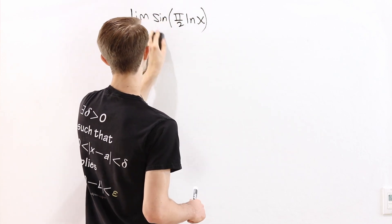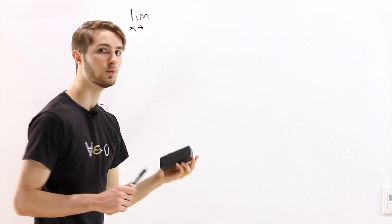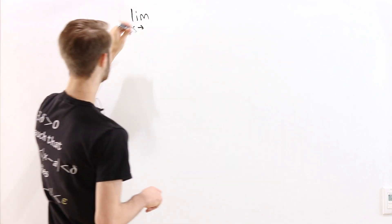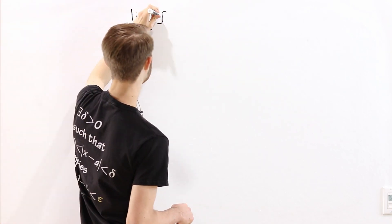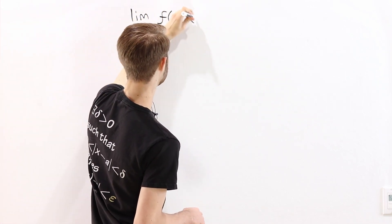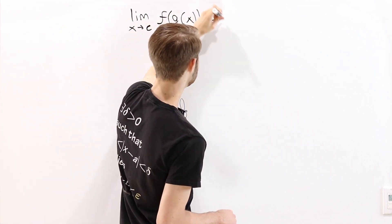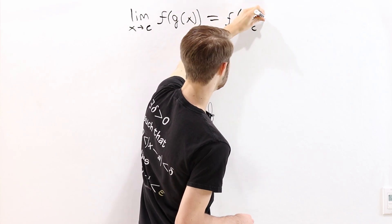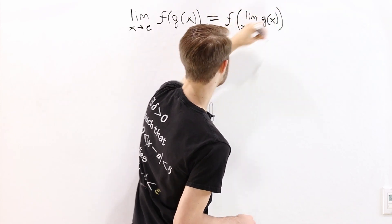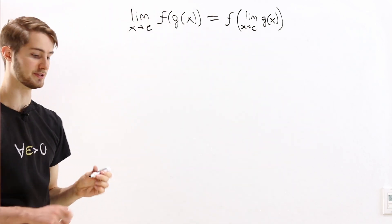I want to investigate a more general statement. The question is: when can we switch a limit and a function? Say we have the limit as x approaches some value c of f of g of x. When does this equal f of the limit as x approaches c of g of x? So when can we take this function f and bring it to the outside of the limit?